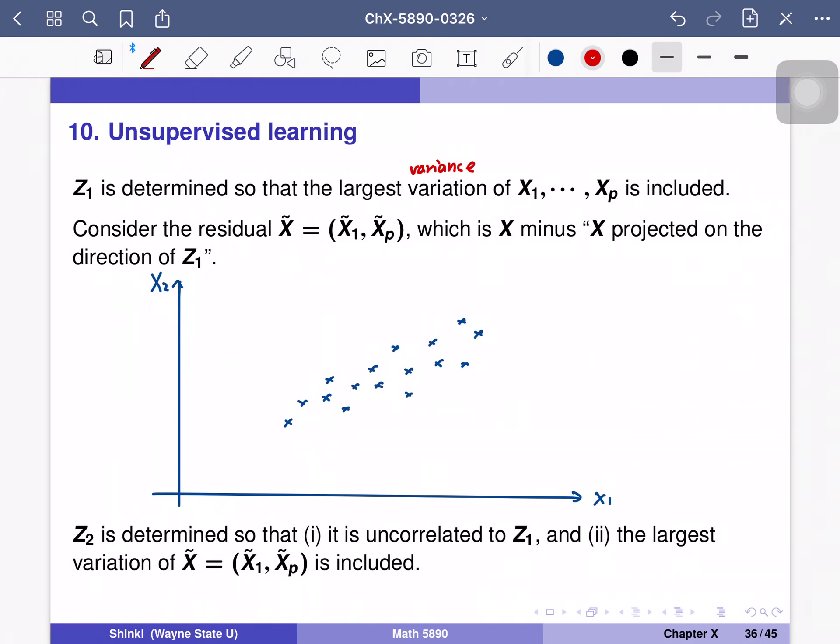So now we want to discuss how to determine z1, z2 up to zq. At first, the z1 is determined so that the largest variance of x1 to xp is included.